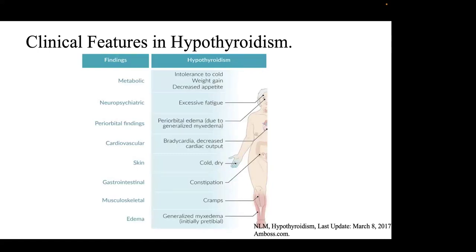Looking at clinical features of hypothyroidism: since thyroid hormone maintains basal metabolic rate, a decrease in T3/T4 levels results in decreased oxygen and substrate consumption. This leads to cold intolerance, cold extremities due to decreased blood flow, decreased sweating, and an altered lipid profile with increased triglycerides and LDL levels.